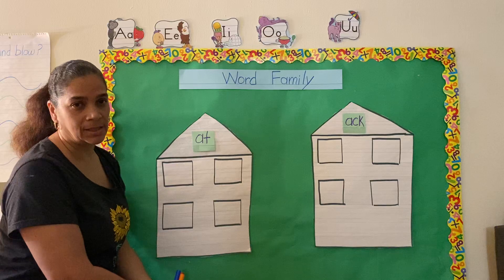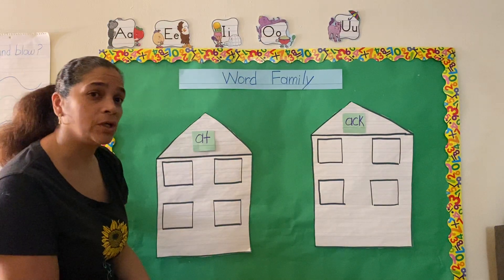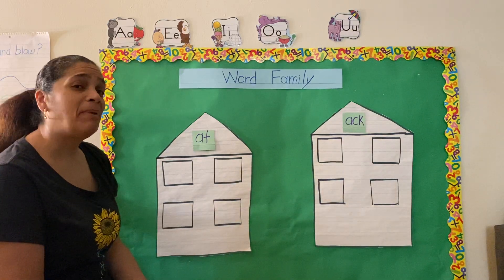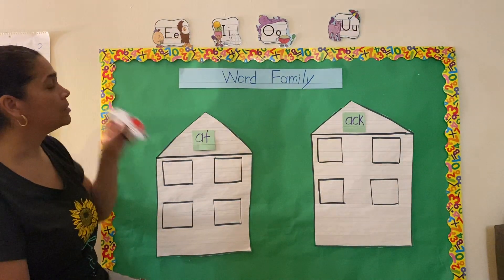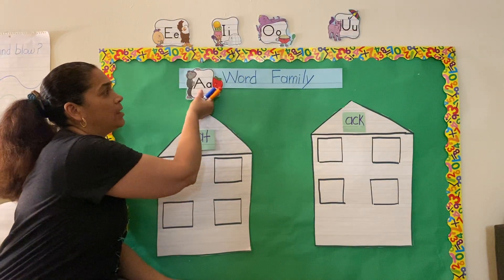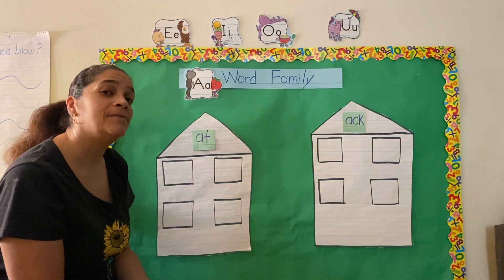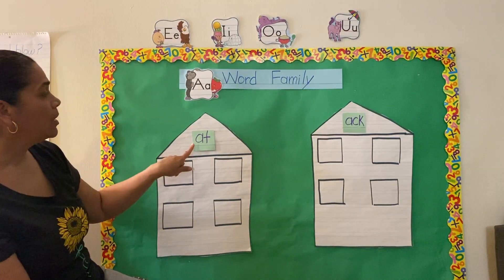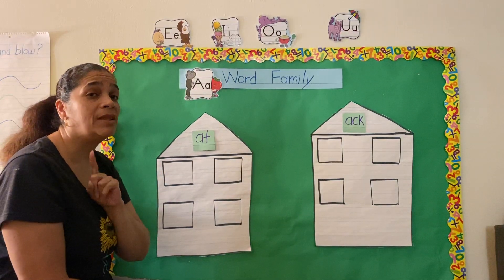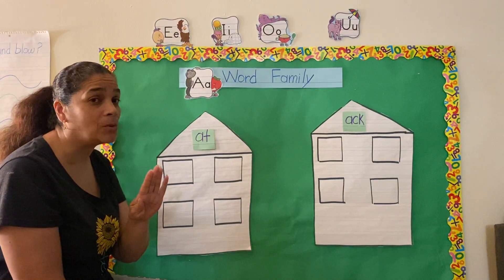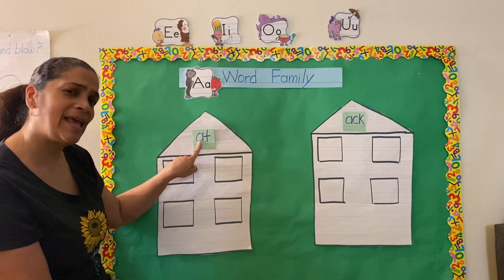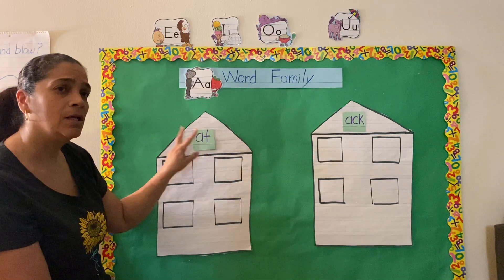So let's get to our topic today, and that is word families. A word family is a pattern. In this pattern, we have a vowel. So today, our word family is going to start with vowel A. When we have a consonant — remember, a consonant is all the letters that are not vowels — and we studied that in class.